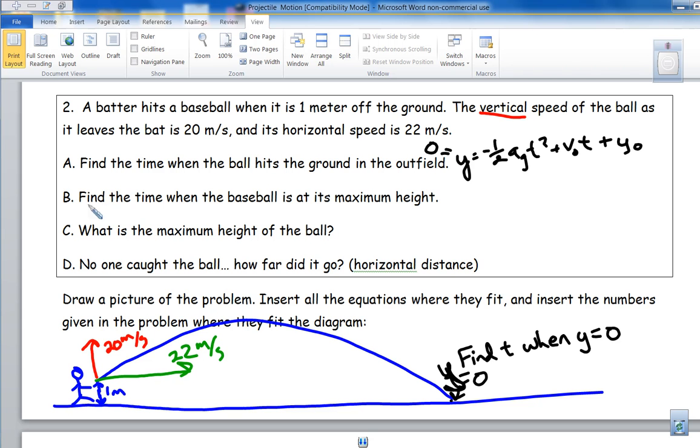Letter B: find the time when the baseball is at its maximum height. That will be at its vertex. At the vertex is when the x coordinate equals negative b over 2a.